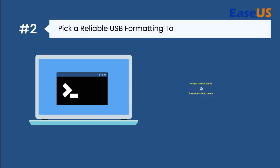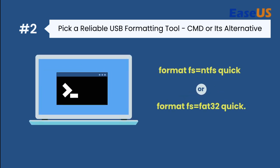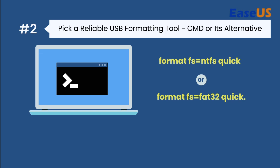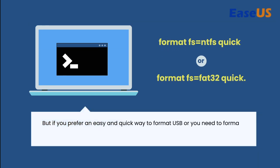Number 2: Pick a reliable USB formatting tool — CMD or its alternative. Experienced Windows users can directly run the CMD formatting command, such as "Format FS=NTFS quick" or "Format FS=FAT32 quick" to format the USB drive. But if you prefer an easy and quick way, or need to format to EXT4, EXT3, or EXT2, turn to a CMD Alternative Format Tool for help.